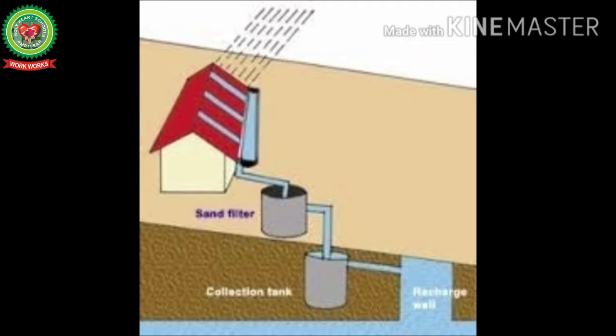Rainwater can be collected from a river or a roof and redirected to a deep pit, well, borehole, or aquifer. It can be used for garden irrigation, livestock, domestic use, and with proper treatment the harvested water can also be used as drinking water. In longer-term storage it can be used for groundwater recharge. Rainwater harvesting is one of the simplest and oldest methods of self-supply of water for households, usually financed by the users.